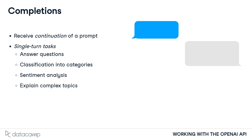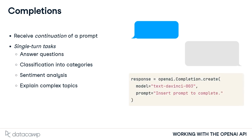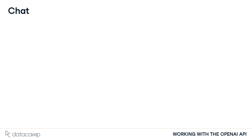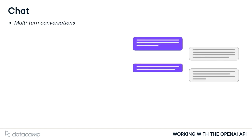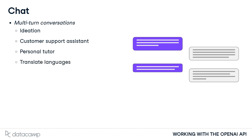The Completions endpoint is available via the OpenAI completion class. The Chat endpoint can be used for applications that require multi-turn tasks including assisting with ideation, customer support questions, personalized tutoring, translating languages, and writing code.